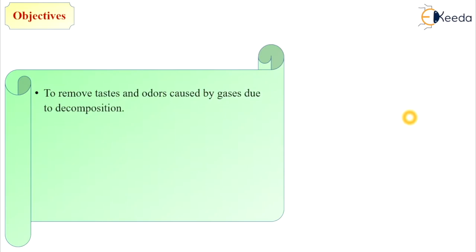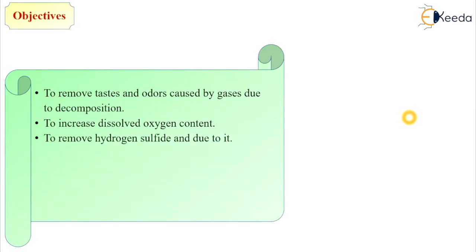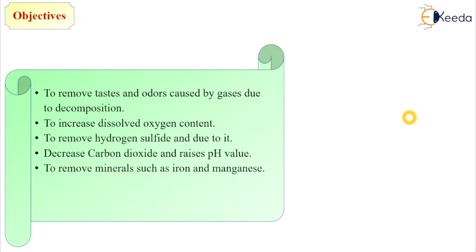The objectives of providing aeration are: to remove taste and odor caused by gases due to decomposition; to increase dissolved oxygen content, as there is a minimum requirement of dissolved oxygen in drinking water; to remove hydrogen sulfide gas, decrease carbon dioxide, and raise the pH value; to remove minerals such as iron and manganese — because of aeration, these metals in ion form get oxidized into a stable form; and due to agitation of aeration, pathogenic bacteria may get killed.